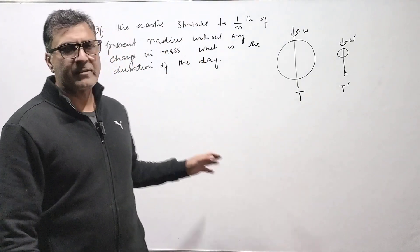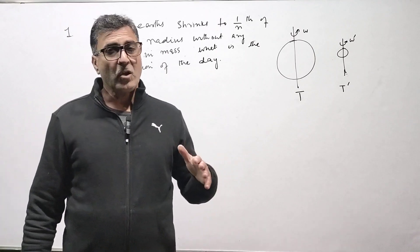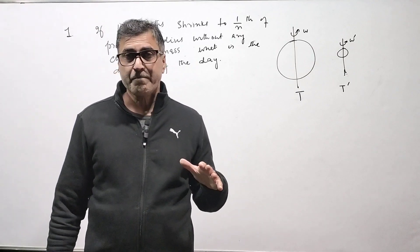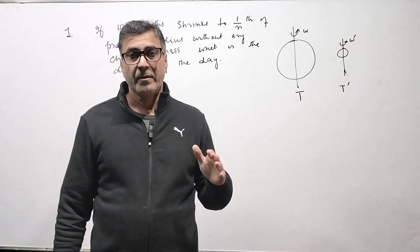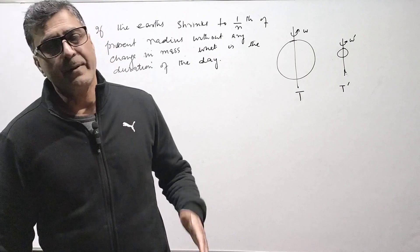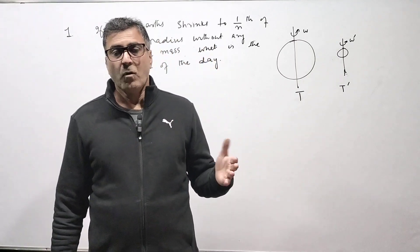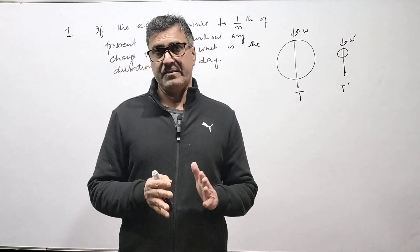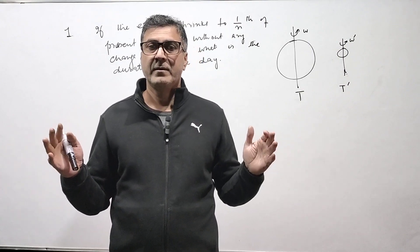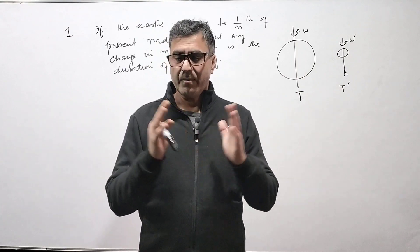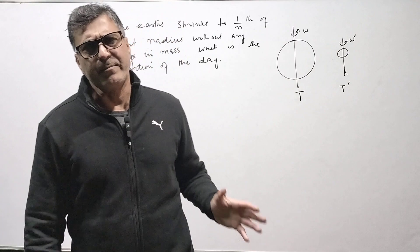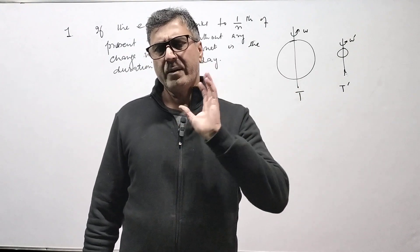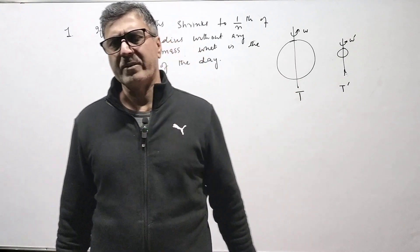Hello students, welcome back to the Tantray Physics Classes. This is the last lecture on rotational dynamics — a problem set on angular momentum and its conservation. The concept is: if there is no external torque about some point or axis, then the angular momentum of the system about that axis remains constant. That is, torque equals dL/dt, so when external torque is zero, angular momentum remains constant.